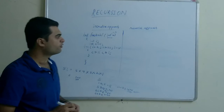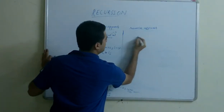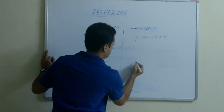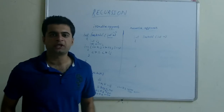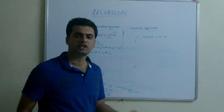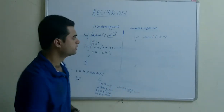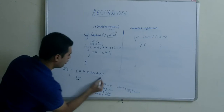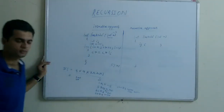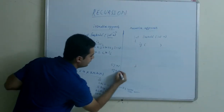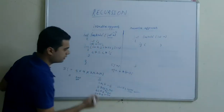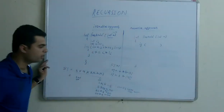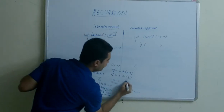Similarly, if I need to write the factorial program in a recursive manner, except for the loop, many factors will remain the same. No recursive program is ever complete without something known as a base condition, which tells the recursive function to stop at some point. By applying some logic, we find that 0 factorial is equal to 1. If n factorial = n × (n−1) factorial, then 1 factorial = 1 × 0 factorial, and since 1 factorial is always 1, therefore 0 factorial will always be 1.